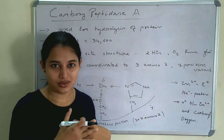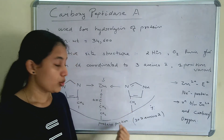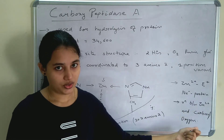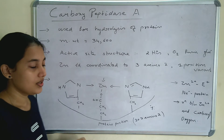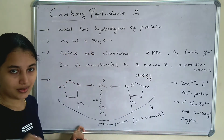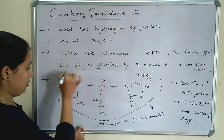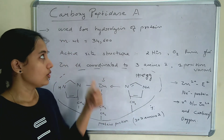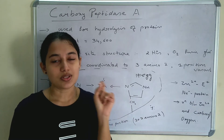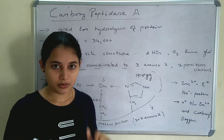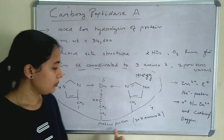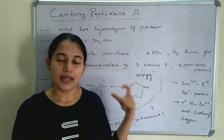Zinc is electrophilic in nature and the protein chain is nucleophilic in nature, so this forms a reaction center. The reaction occurs between the Zn²⁺ and the carbonyl oxygen. The overall structure of carboxypeptidase A is egg-like in shape. To summarize: molecular weight is 34,600; coordination sites are satisfied by two histidine groups and oxygen from glutamate; one position is vacant; the protein portion has 307 amino acids.